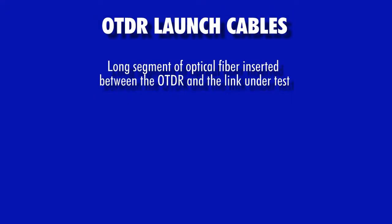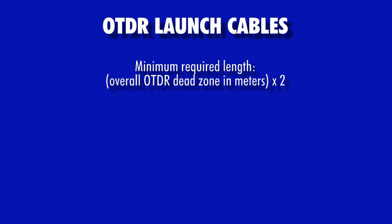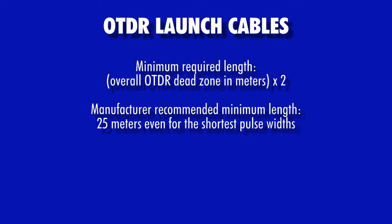To counter the effect of OTDR dead zones, a long segment of optical fiber called an OTDR launch cable must be inserted between the OTDR and the link under test. OTDR launch cables have different names in the fiber optics industry, such as dead zone box, fiber ring, or pulse suppressor, but just think of an OTDR launch cable as simply an extremely long patch cable. As a general rule of thumb, the minimum length of an OTDR launch cable must be more than twice as long as the overall dead zone, although OTDR manufacturers generally recommend a minimum launch cable length of 25 meters even for the shortest pulse widths.